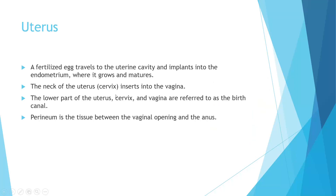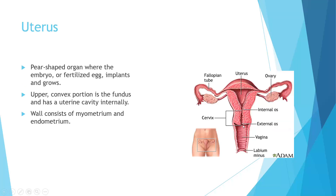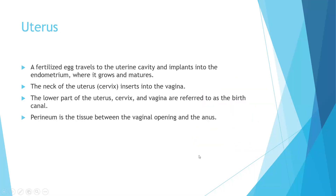The neck of the uterus — the cervix — is this very tightly closed area. This is what keeps bacteria and whatnot out and is the passageway down into the vagina. The lower part of the uterus, the cervix, and the vagina are all collectively referred to as the birth canal.